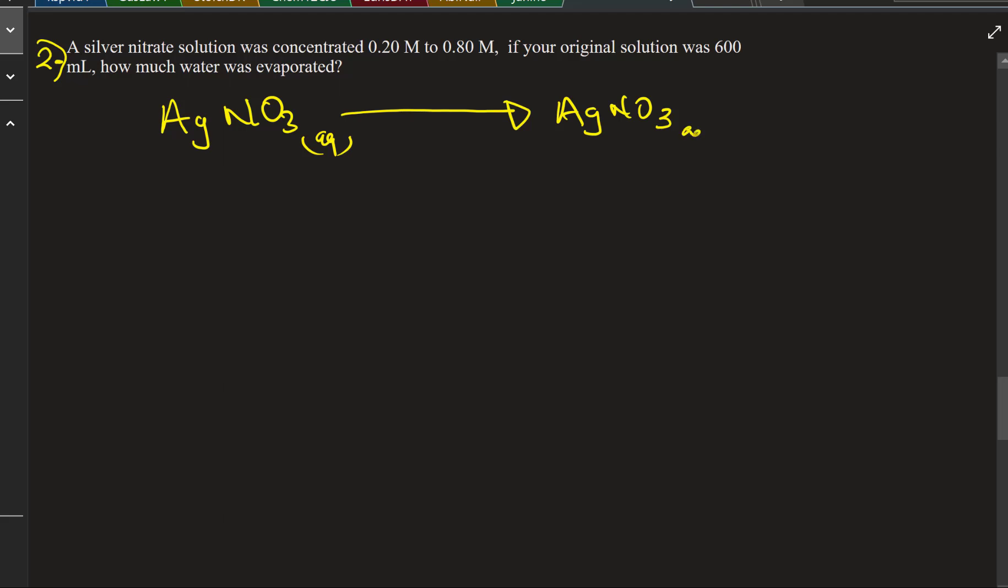Silver nitrate at 0.20 molar goes into 0.80 molar. This is a transition from low concentration to high concentration, so that's minus water or removal of water or evaporation of water.